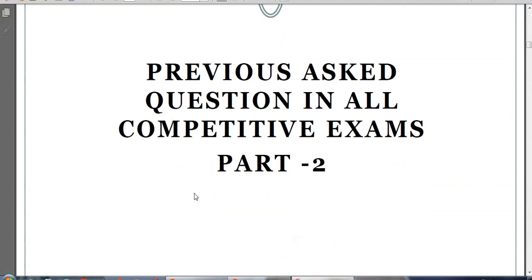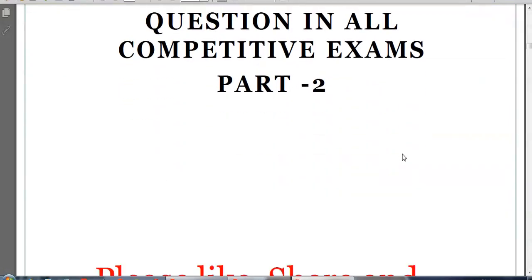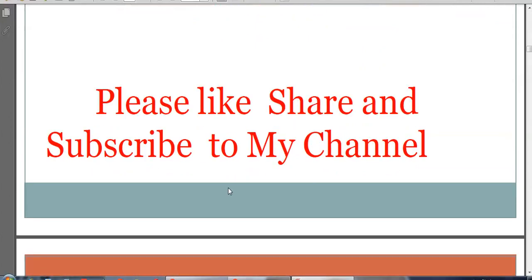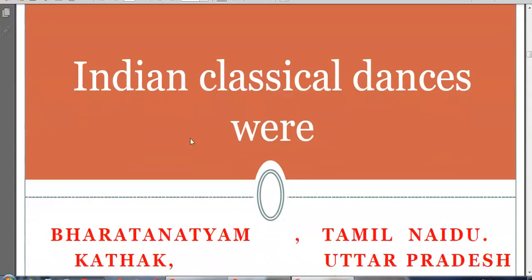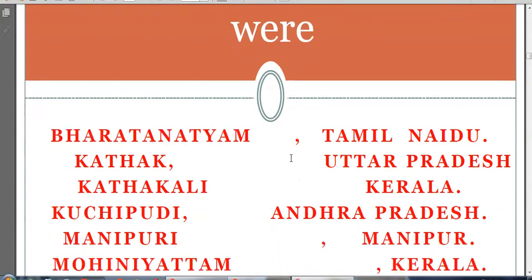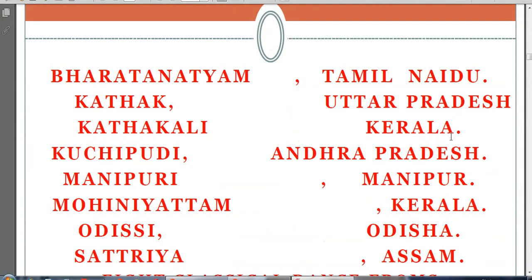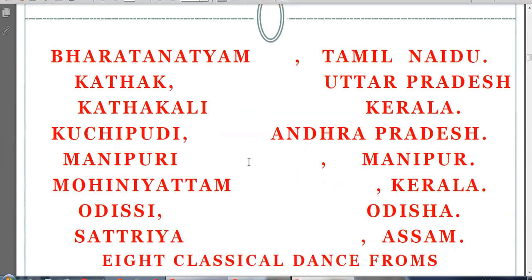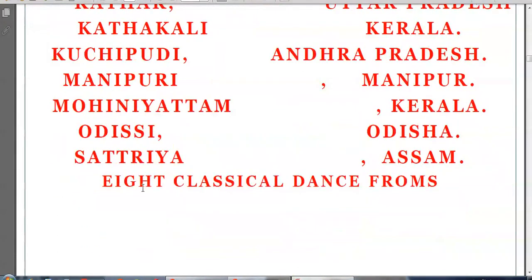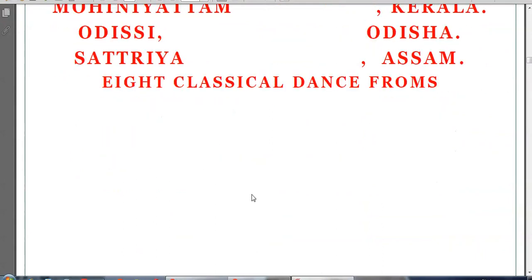Please refer to my Part 1 video. The 8 Indian classical dances are: Bharatanatyam from Tamil Nadu, Kathak from Uttar Pradesh, Kathakali from Kerala, Kuchipudi from Andhra Pradesh, Manipuri from Manipur, Mohini Attam from Kerala, Odissi from Odisha, and Satriya from Assam. These 8 classical dances are currently recognized.